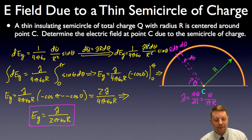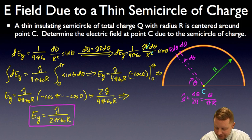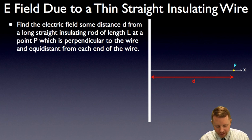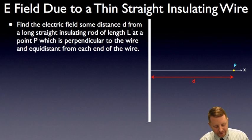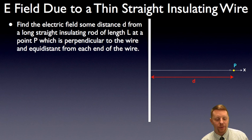So we get into some pretty heavy math, but really all the work is in the setup: taking that little tiny bit of charge, finding the electric field due to that bit of charge, and then integrating — adding up all those little bits to give us the whole. There's our general strategy. Now the next one, we're going to do a thin straight insulating wire. This one's going to get a little bit more involved. Find the electric field at some distance d at point P from a long straight insulating rod of length L. We'll assume it is uniformly charged, and P is perpendicular from the center of that wire. Let's keep things as simple as we can.